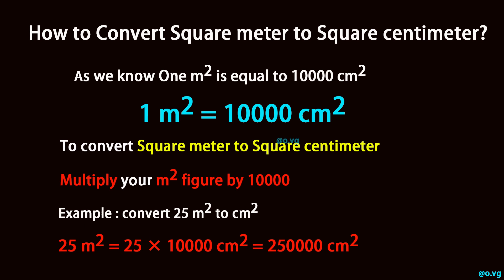Convert 25 square meter to square centimeter. 25 square meter equals 25 times 10,000 square centimeter, which equals 250,000 square centimeter.